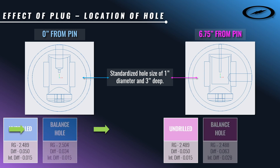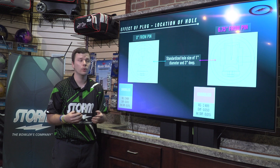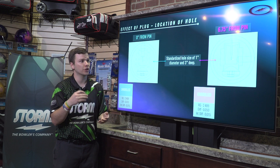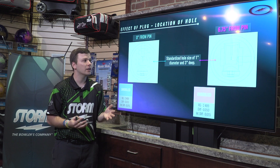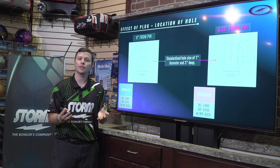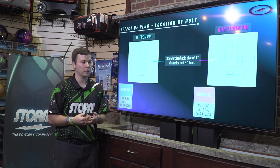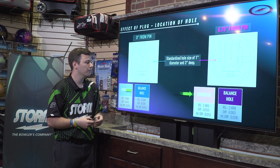What we're going to do next is put a hole in two vastly different spots: one at zero inches — straight through the pin — and one at six and three quarter inches, which is very far away from the pin. This is going to be a standard hole size of one inch in diameter going three inches deep, so it's apples to apples in comparison. The only difference is the location of where that hole is.